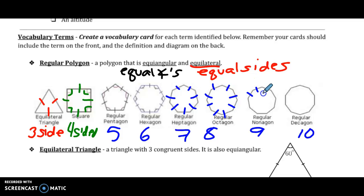Again, that is the definition of what a regular polygon is—because it has congruent angles and congruent sides, both equiangular and equilateral.